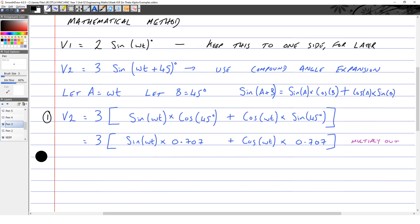Then multiply out the big bracket. V2 is equal to 2.121 sin(ωt) + 2.121 cos(ωt) because three lots of 0.707 is 2.121.